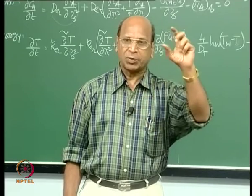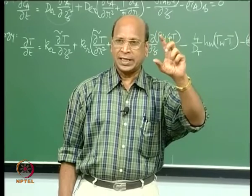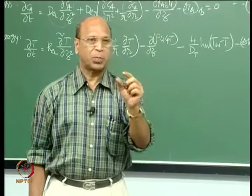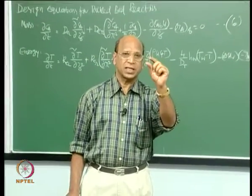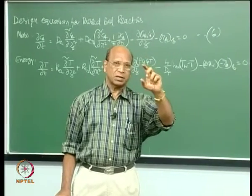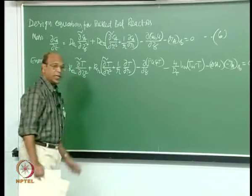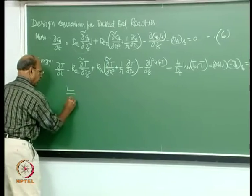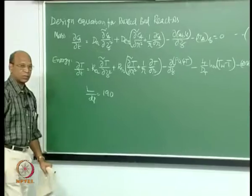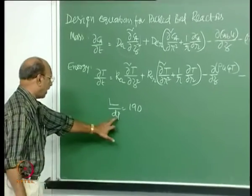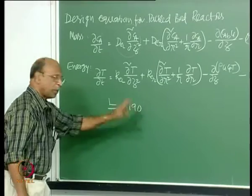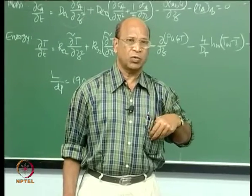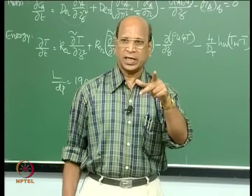The minimum length for ignoring the axial dispersion term should give L by Dp ≥ 190. If I have a 1 centimeter particle, the length minimum should be 1.9 meters. This we can prove through residence time distribution studies, where we have discussed the axial dispersion model. So this condition of 1.9 meters and particle size not beyond half an inch — 12 mm — is very frequently used in industry.